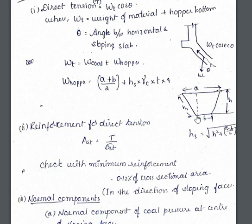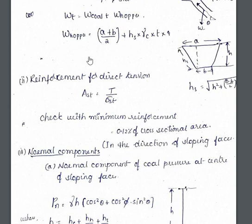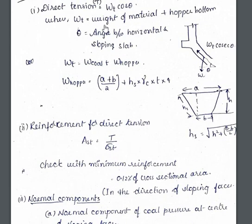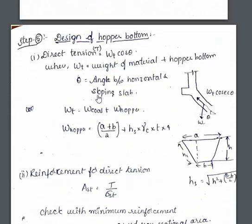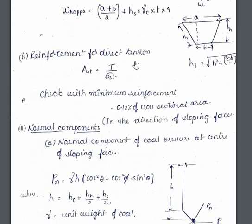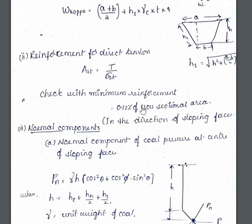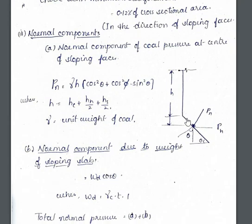The hopper top dimension is represented by capital A and the hopper bottom dimension by small a. We find the weight of the hopper and weight of the material at the hopper, which we can determine from the volume calculations done earlier. Reinforcement for direct tension: Ast = T / sigma_st. We also check the minimum reinforcement of 0.12% of cross-sectional area.